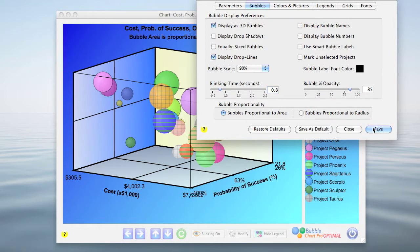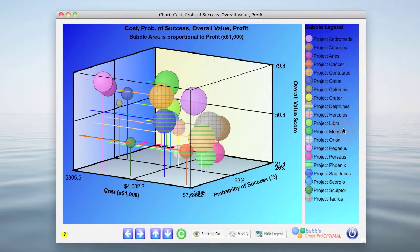After saving and closing, now you can see that each bubble has a drop line, which are lines that run from the center of each bubble to the grids on the sides, so that you can see exactly where the center of the bubble is in relationship to both the vertical and horizontal grids.